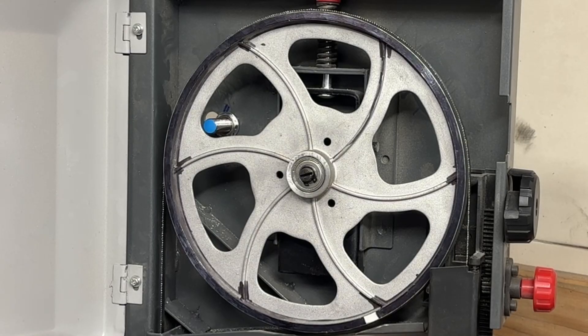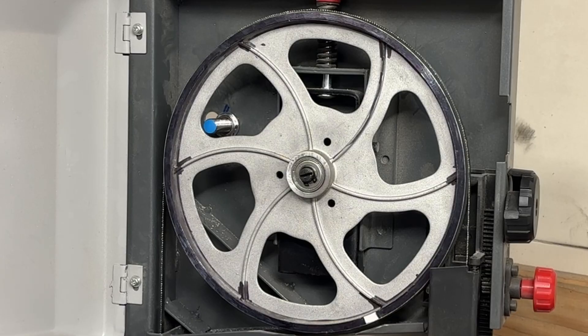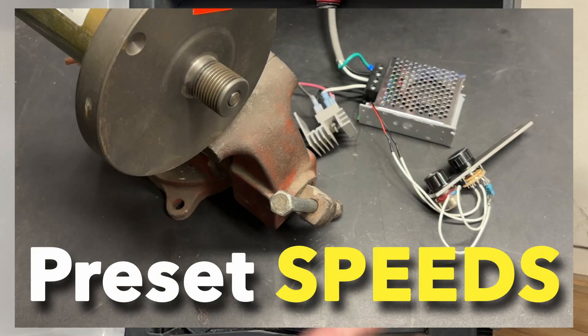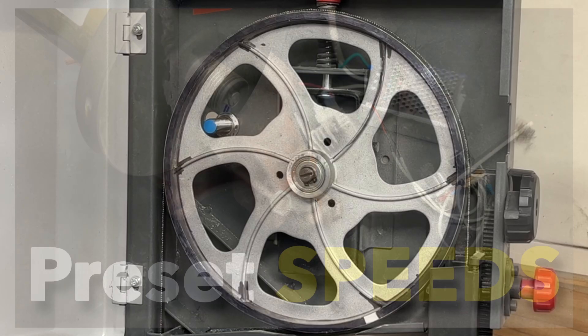Now had I done preset speeds, used this little piece of reflective tape, and my digital RPM meter, I could have set it up so that one is for steel, and two is for aluminum, and so on and so forth. And I have an elegant system showing how to do that. I did a video on that using a rotary switch. If you've not seen that video, you should go check it out.